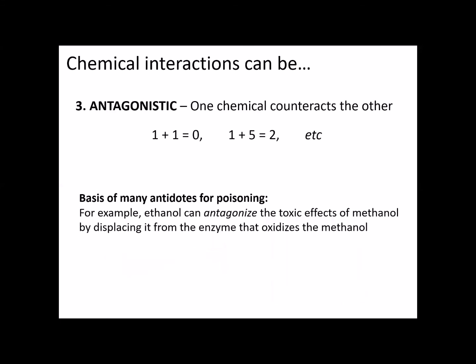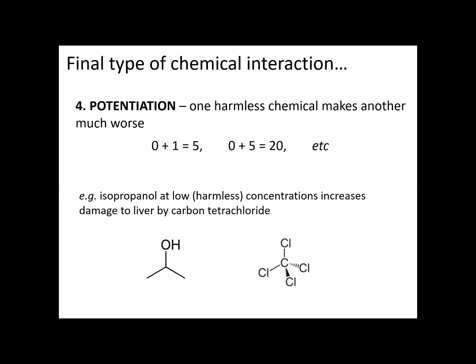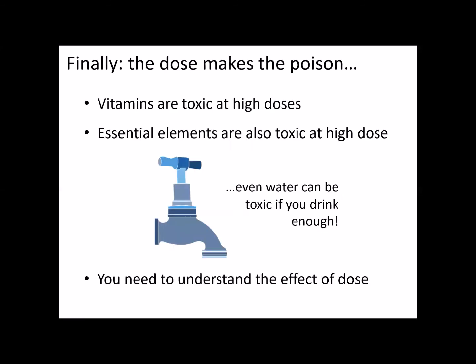Interactions can also be antagonistic, where one chemical counteracts the other — and this is the basis of antidotes. For example, if methanol has been taken into the body, it's toxic and can cause blindness. Ethanol can actually antagonize the toxic effects of methanol by displacing it from the enzyme that oxidizes the methanol. The final type of chemical interaction is potentiation, where one harmless chemical makes another one much worse. Isopropanol at low concentrations is harmless, but carbon tetrachloride has harmful toxic effects — and if you have both together, the isopropanol makes the effect of the carbon tetrachloride much, much worse.